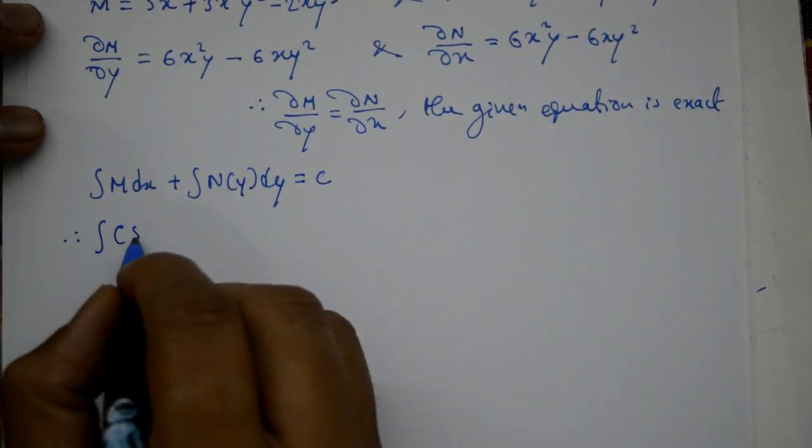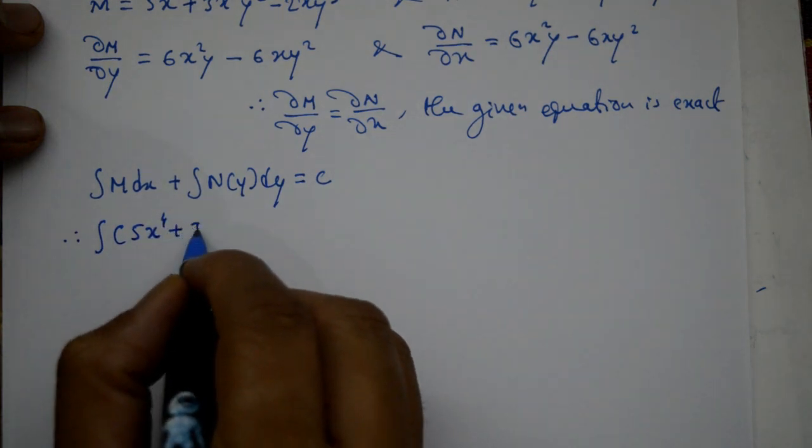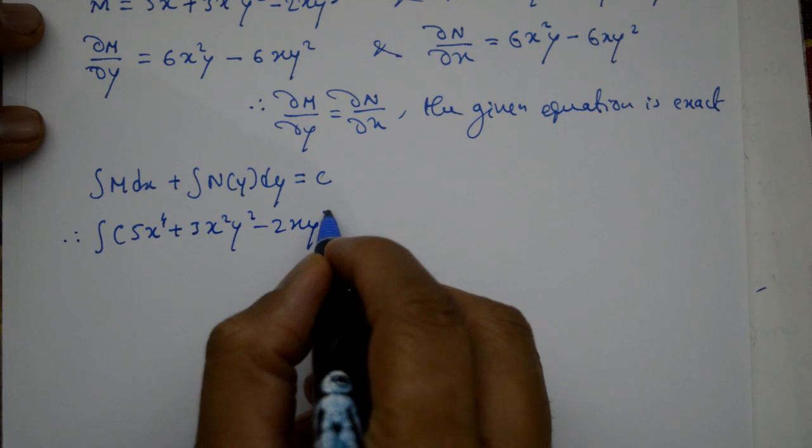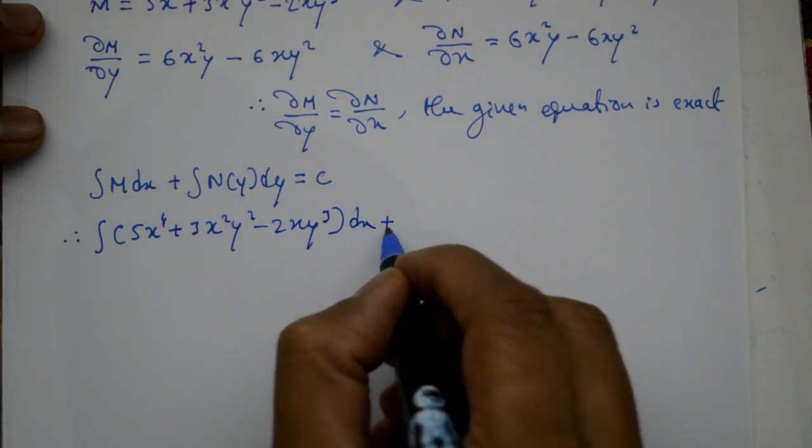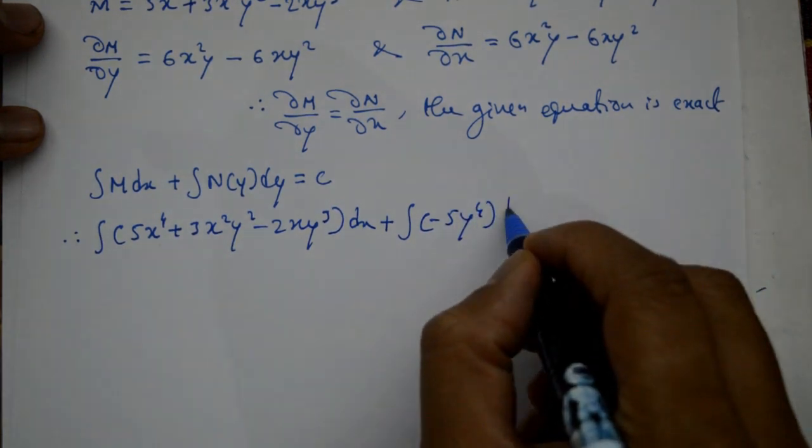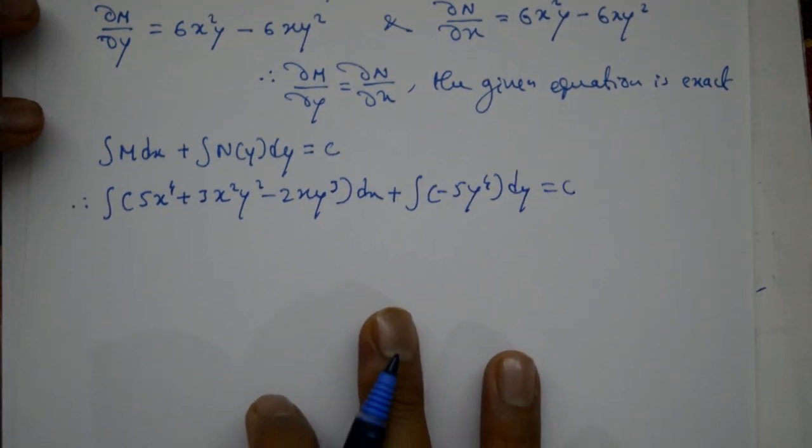Therefore, integration of M: 5x^4 + 3x^2y^2 - 2xy^3 dx plus integration of N(y): -5y^4 dy equal to c.